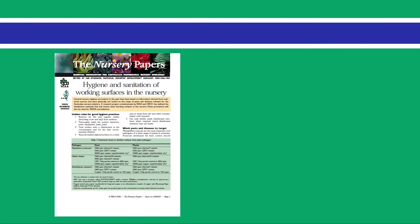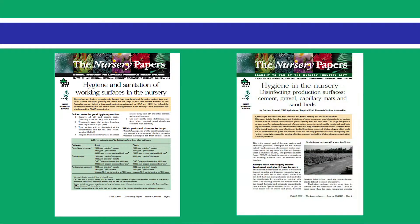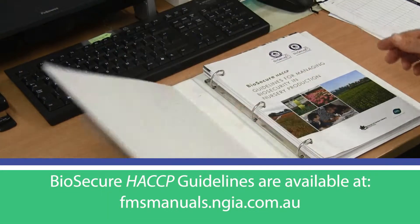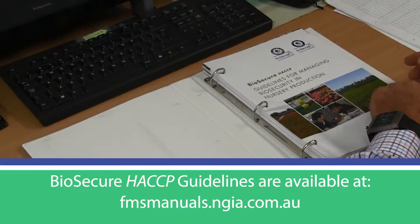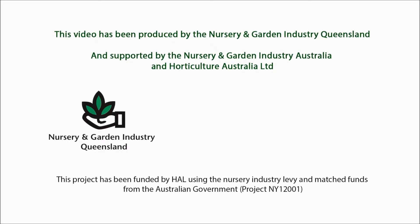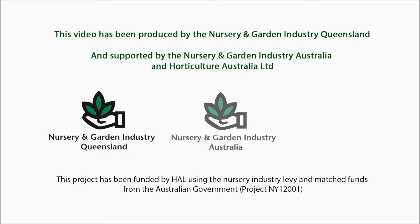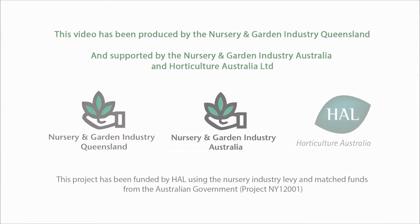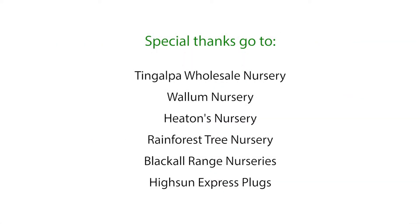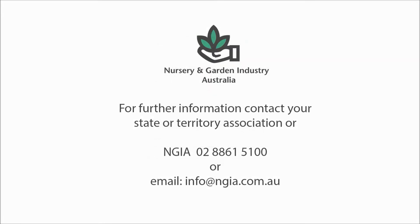A range of publications and resources on nursery hygiene and sanitation are available on the NGIA website. More information can be found in the Biosecure HACCP guidelines. This video has been produced by the Nursery and Garden Industry Queensland and supported by the Nursery and Garden Industry Australia and Horticulture Australia Limited. Special thanks go to the following nurseries for help in producing this video. For further information contact your State or Territory Association or NGIA.